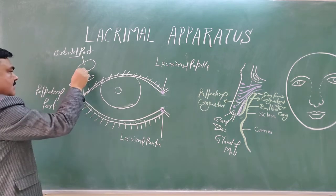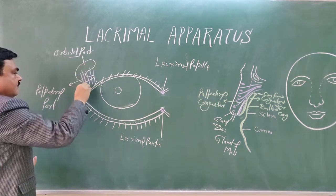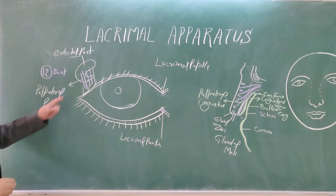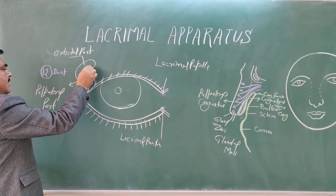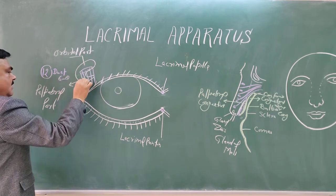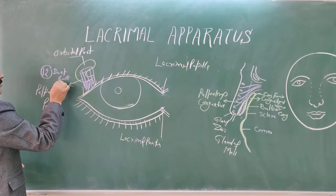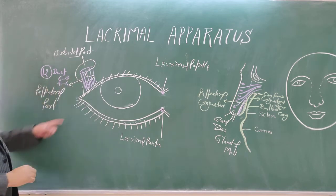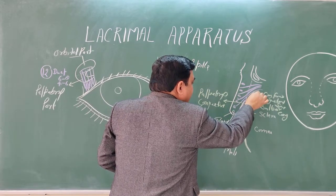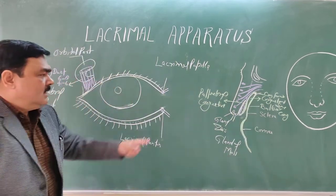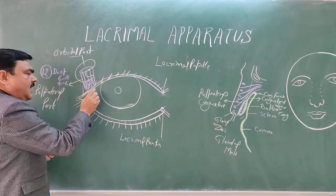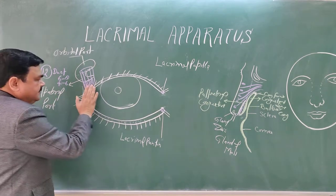There are numerous ducts, about 12 in total. About 6 to 8 ducts arise from the orbital part and about 4 to 6 arise from the palpebral part. These ducts open into the lacrimal part of the fornix. With blinking of the eyelid, the lacrimal fluid spreads over the whole area, and from here it is absorbed through the lacrimal punctum.